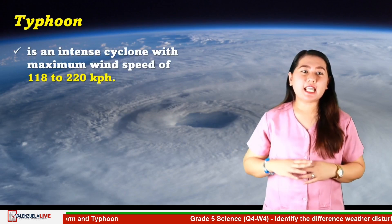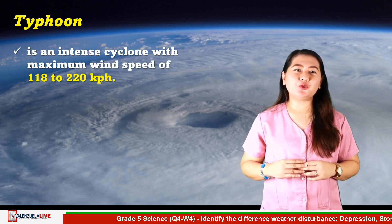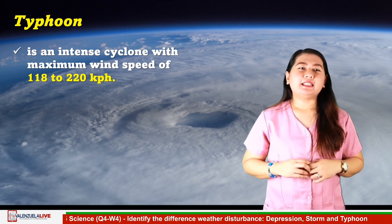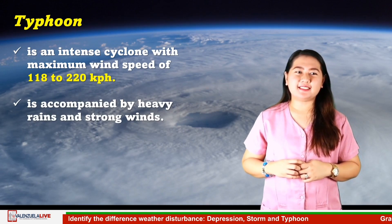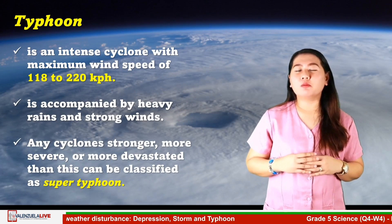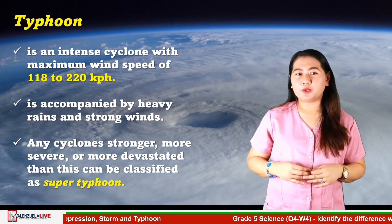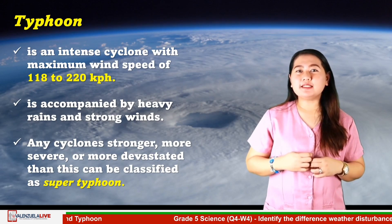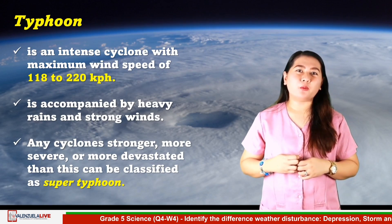A typhoon is an intense cyclone with maximum wind speed of 118 to 220 kilometers per hour. Most of the time, a typhoon is accompanied by heavy rains and strong winds. Any cyclone stronger, more severe, or more devastating than this can be classified as a super typhoon. Meteorologists use a tropical cyclone intensity scale to classify cyclones entering our country.